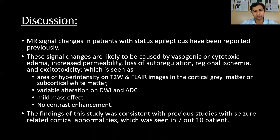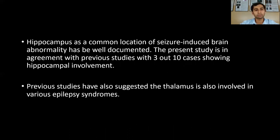The findings of this study were consistent with previous studies on seizure-related cortical abnormalities, with 7 out of 10 patients showing cortical abnormalities. The hippocampus as a common location of seizure-induced brain abnormality is well documented; in our study, 3 out of 10 cases showed hippocampal involvement. Previous studies have also suggested the thalamus to be involved in various epilepsy syndromes.